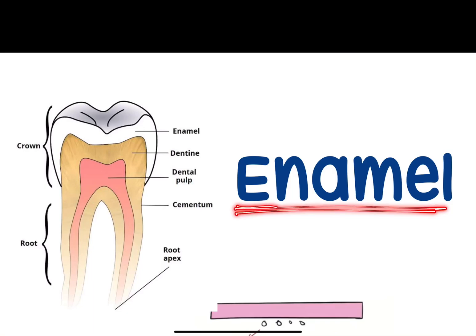Enamel is the tissue which covers the crown portion of the tooth. The entire surface of the crown is covered with a substance called enamel.